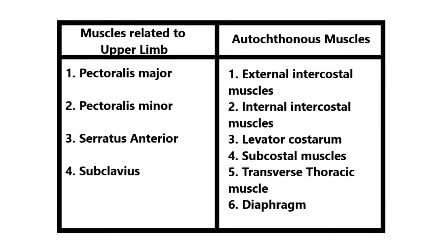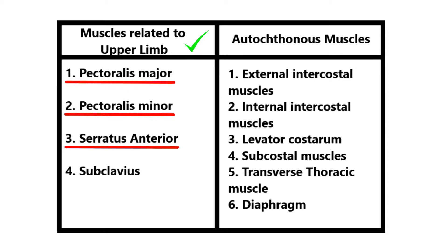Muscles of the thorax can be divided into two groups. The first group is muscles related to the upper limb, which includes four muscles: pectoralis major, pectoralis minor, serratus anterior, and subclavius.